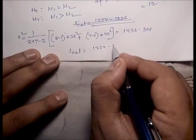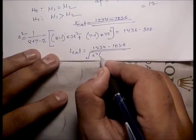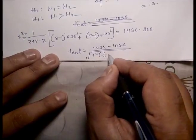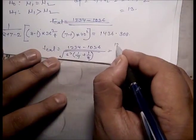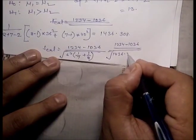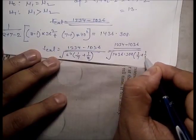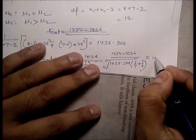Now t_cal equals (1234 minus 1036) divided by the square root of [1436.308 times (1/7 plus 1/8)], and the calculated value is t_cal equals 10.094.